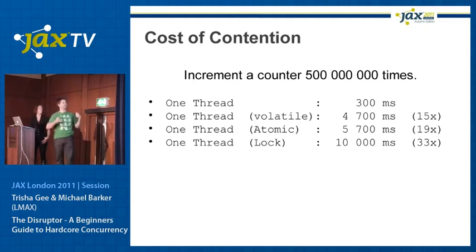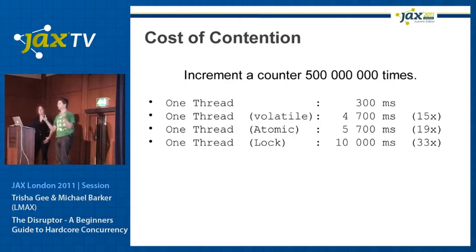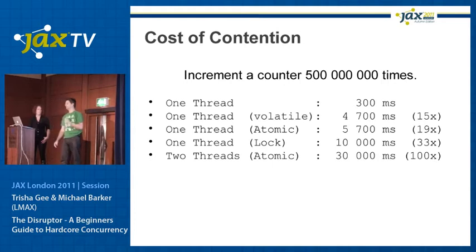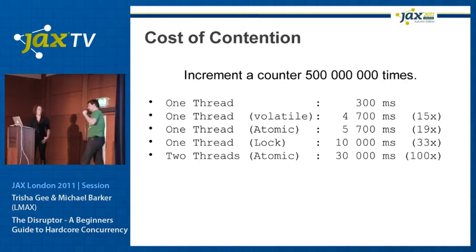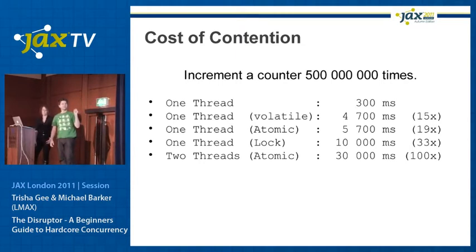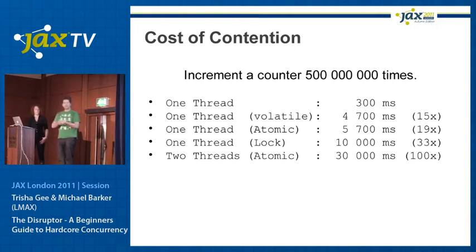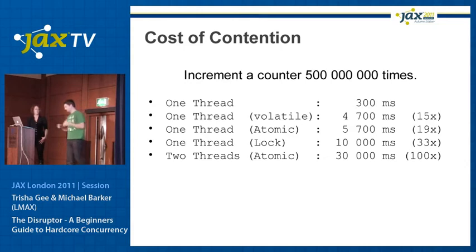Let's add some contention — a second thread — starting with the faster version, the atomic. Two threads contending on the same atomic to increment this value: 100 times slower than not doing it multi-threaded at all, and six times slower than doing it in one thread with an atomic. This starts to illustrate the cost of contention. When you have two threads contending on the same value, you have serious problems trying to make it efficient, even with probably the most efficient way of incrementing available in Java.